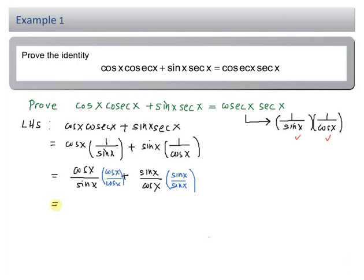This will produce a common denominator that is sin x cos x and we have on the numerator cos x times cos x, we have cos squared x plus sin x times sin x, we have sin squared x. Remember your basic identity cos squared x plus sin squared x equals 1.